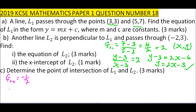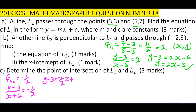Now that we have the gradient and the point (−2, 3), we write (y − 3) / (x − (−2)) = −1/2, which gives (y − 3) / (x + 2) = −1/2. Cross multiplying: y − 3 = −1/2 x − 1, so y = −1/2 x + 2. That is the equation of line L2.